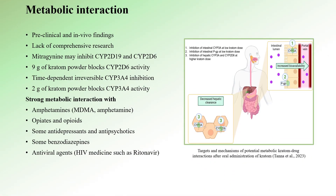Let's briefly examine Kratom's potential metabolic interactions with other substances metabolized by the same enzymes, noting this information comes from animal studies, in vivo experiments, and preclinical research. According to current research, mitragynine may inhibit the activity of CYP2C19 and CYP2D6 enzymes, resulting in slower clearance of substances metabolized by these enzymes, potentially increasing the risk of overdose. One study suggested that as little as 9 grams of Kratom powder containing 83 mg of mitragynine might inhibit these enzymes.